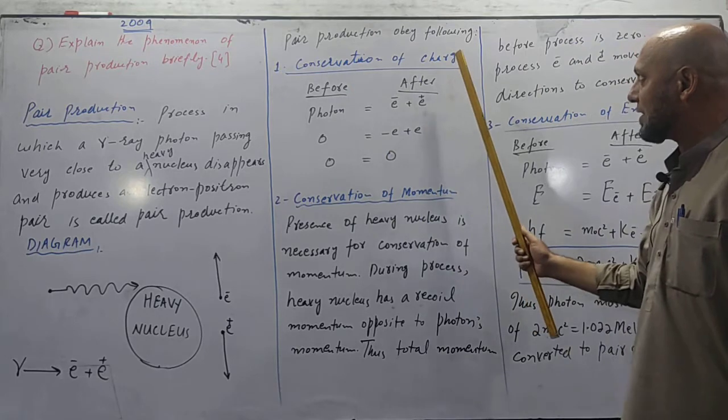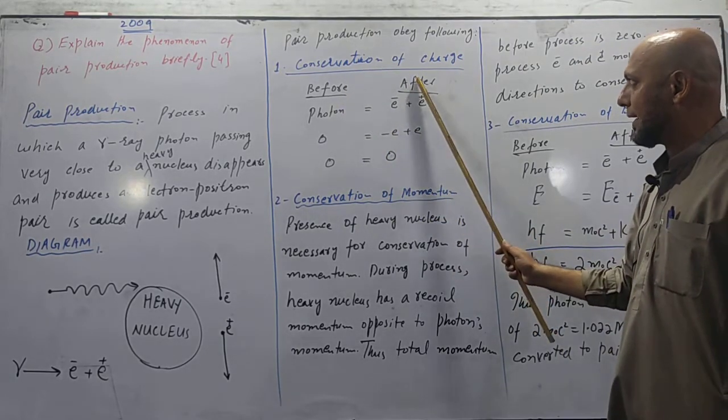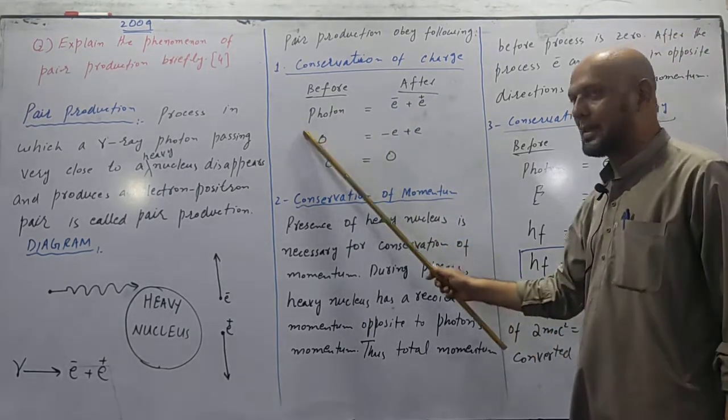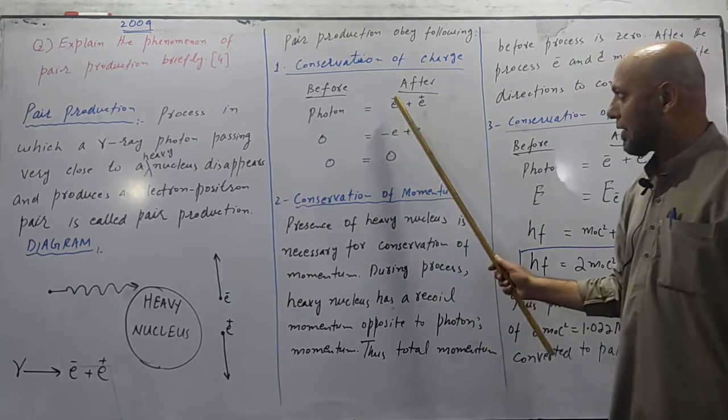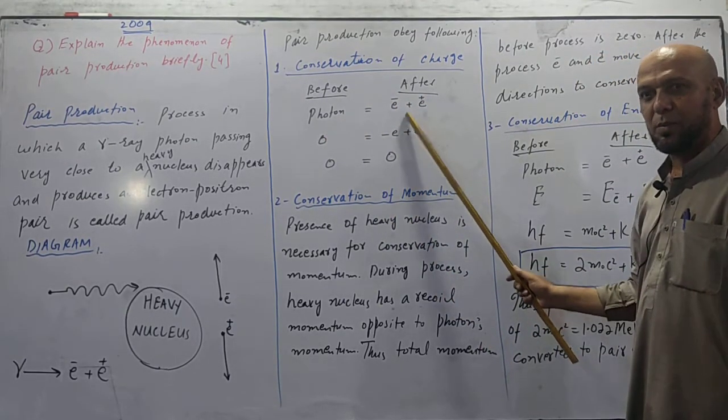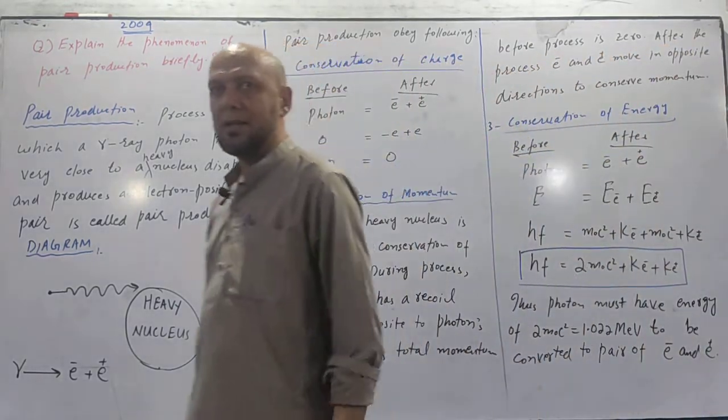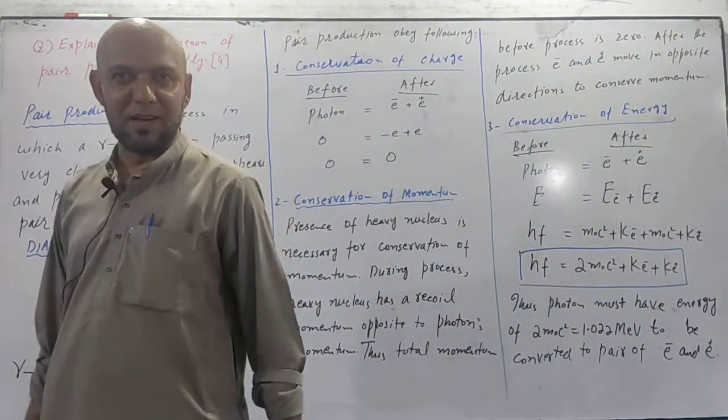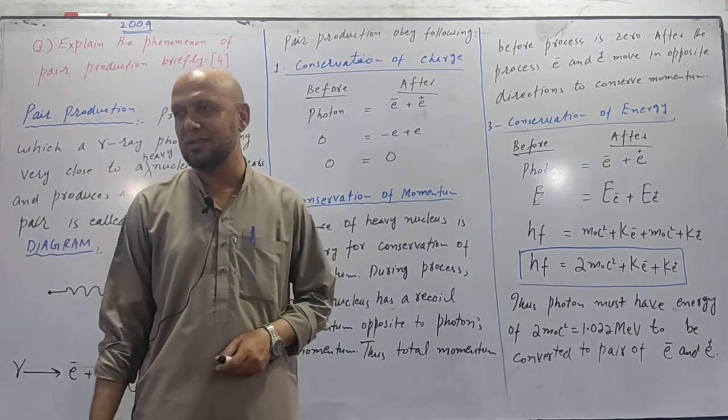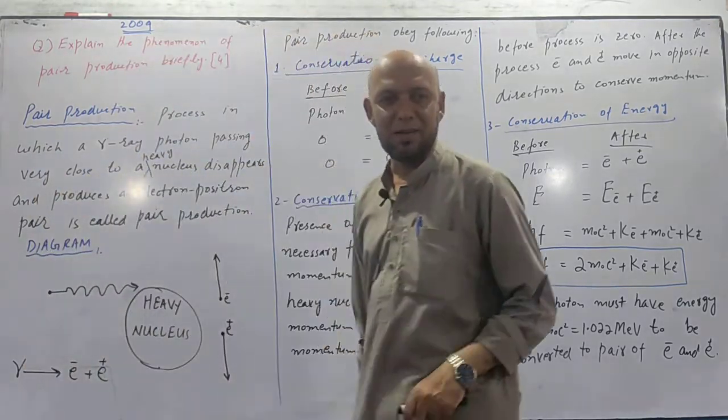Number one: conservation of charge. Before interaction we have photon. After interaction electron and positron. Photon is chargeless particle. Electron has charge minus e, positron has charge plus e. So minus e plus e becomes zero. Charge is thus conserved.